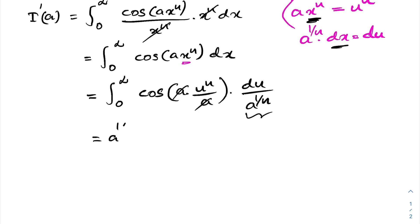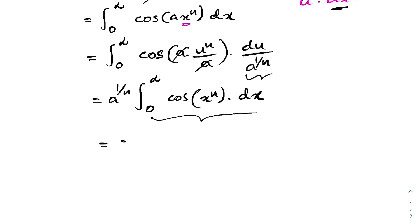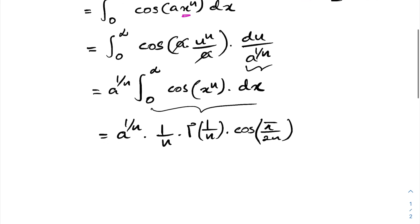Since the definite integral is independent of the variable name, we can write this as the integral from 0 to infinity of cosine of x^n dx. This integral is a known result from a previous video — I'll include the link in the description. It equals (1/n) · Γ(1/n) · cos(π/(2n)).